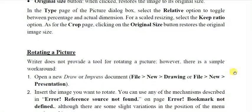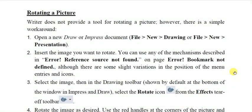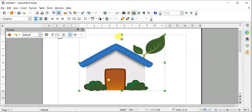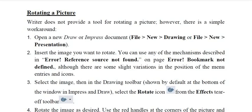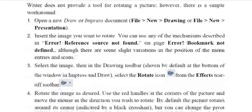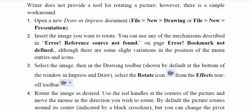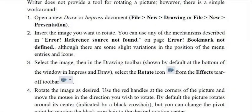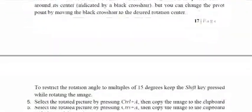Next is rotating a picture. Writer does not provide a built-in tool for rotating a picture, unlike MS Word which has a rotation handle. The workaround is: open a new Draw or Impress document via File > New > Drawing or Presentation, place your image there, select it, and use the Drawing toolbar to rotate it. Then copy and paste it back into the Writer document.